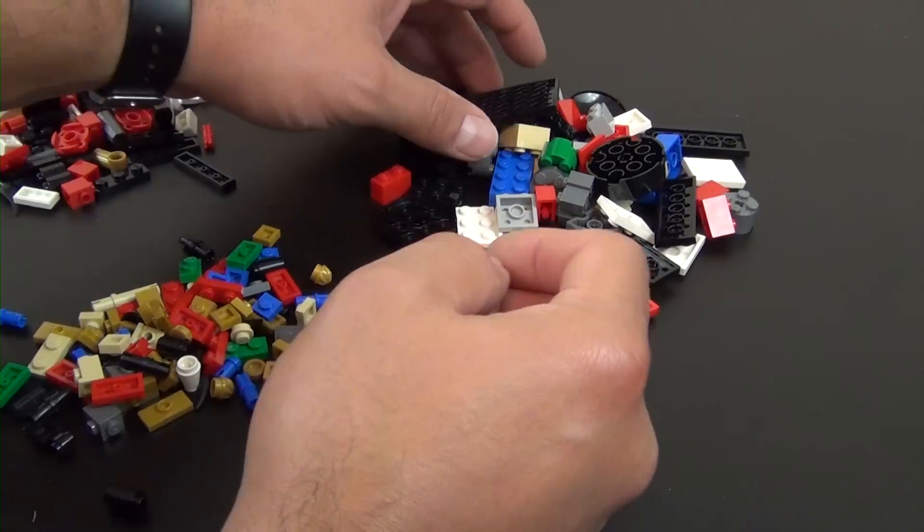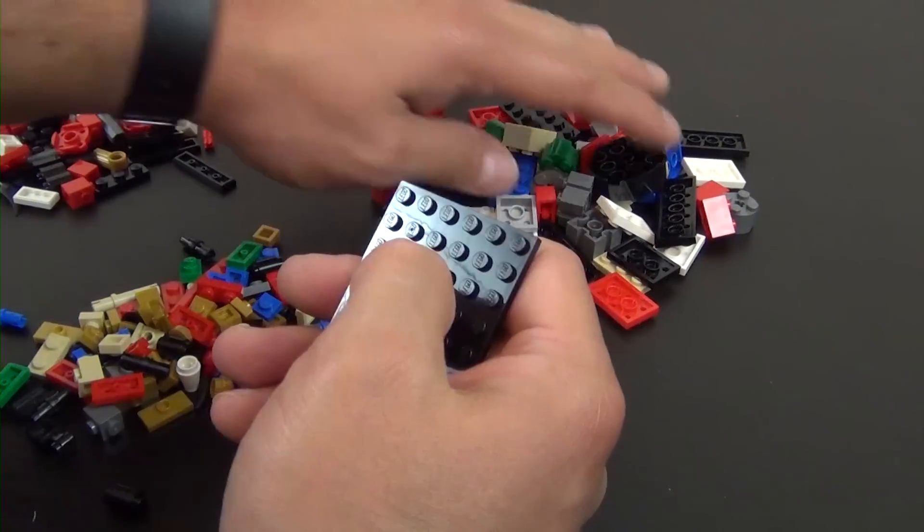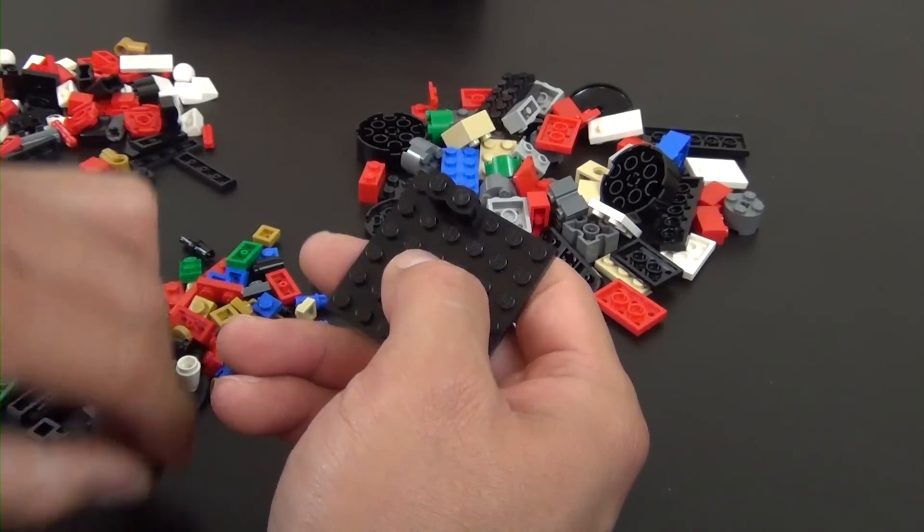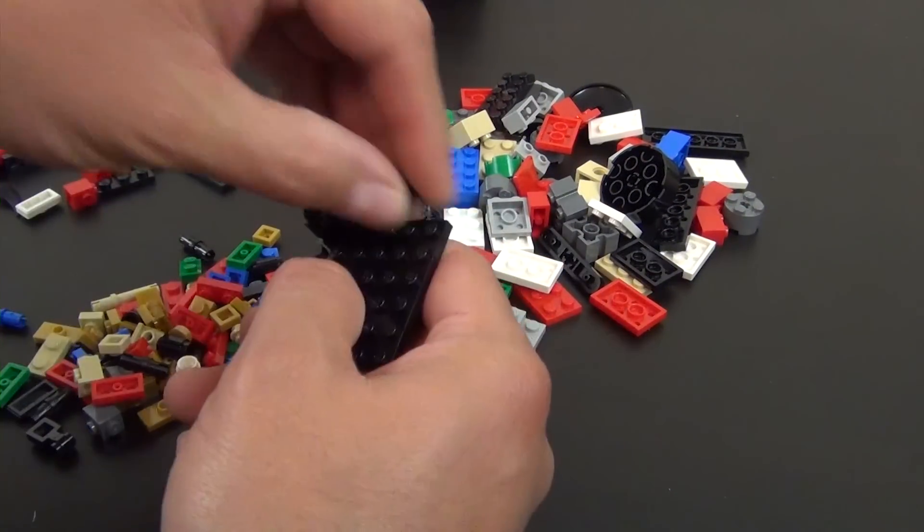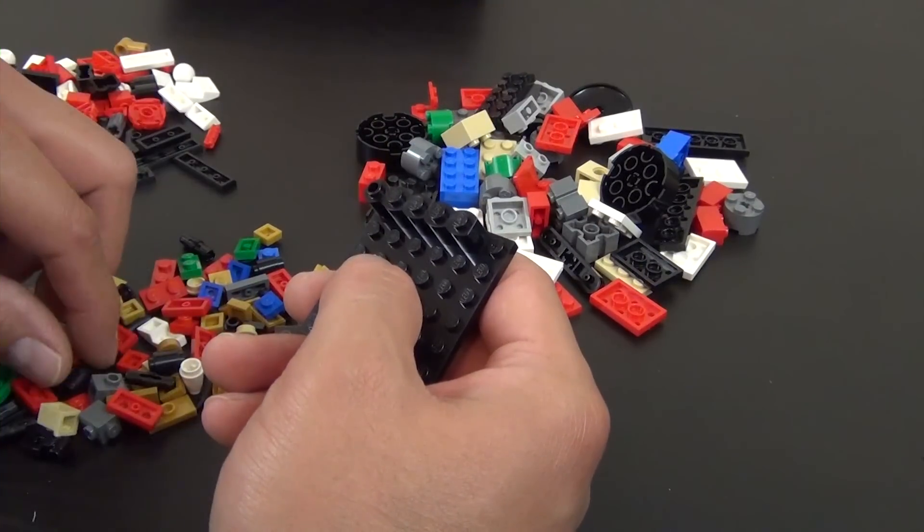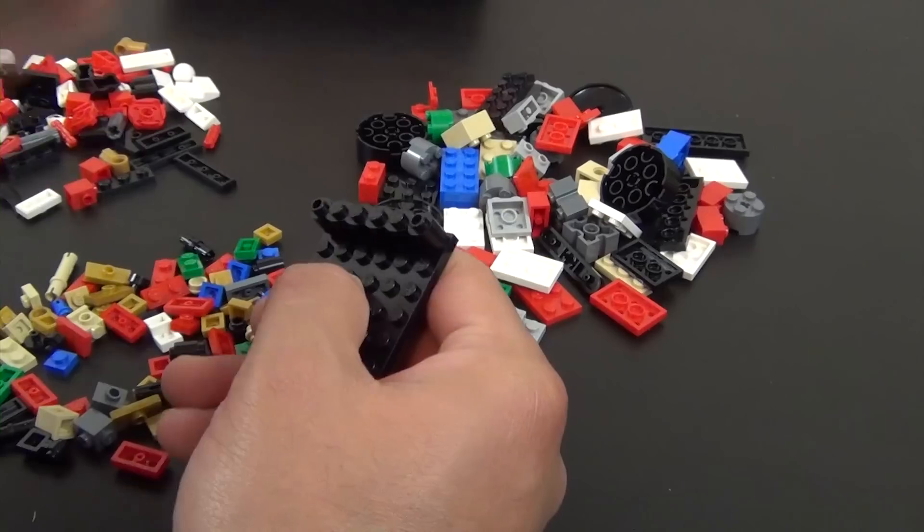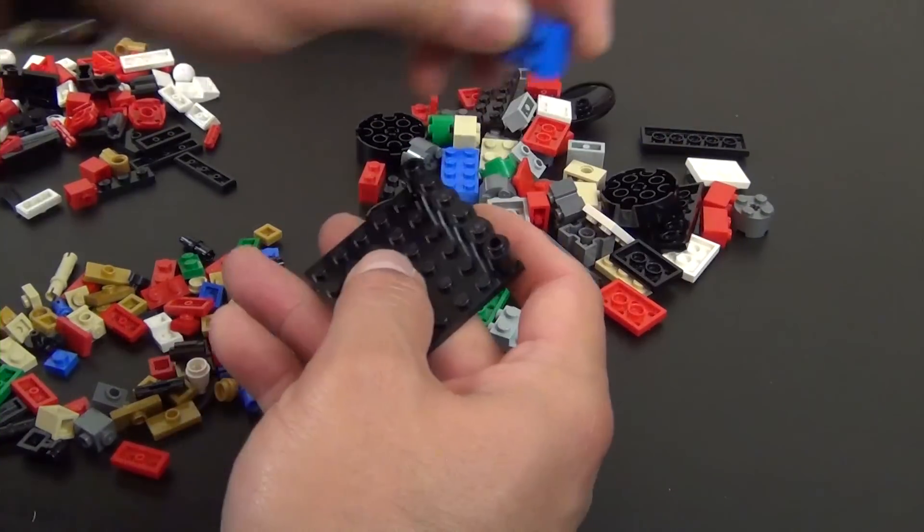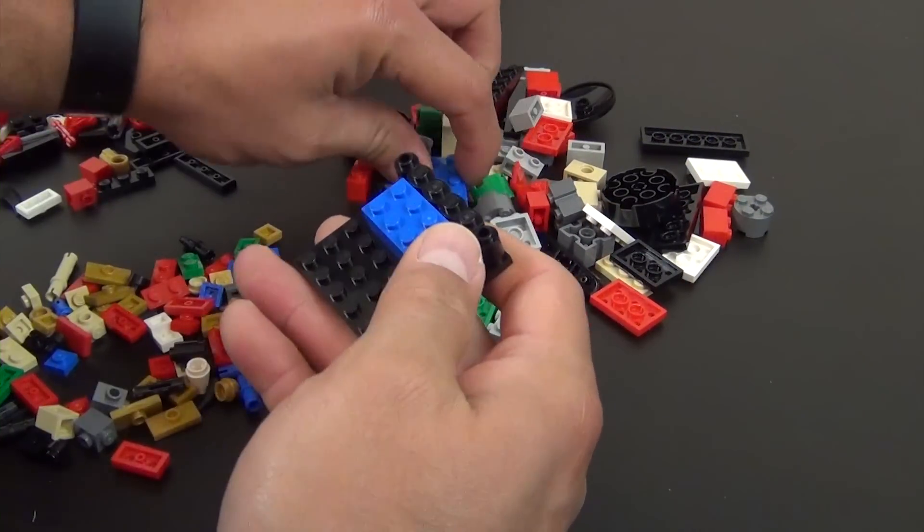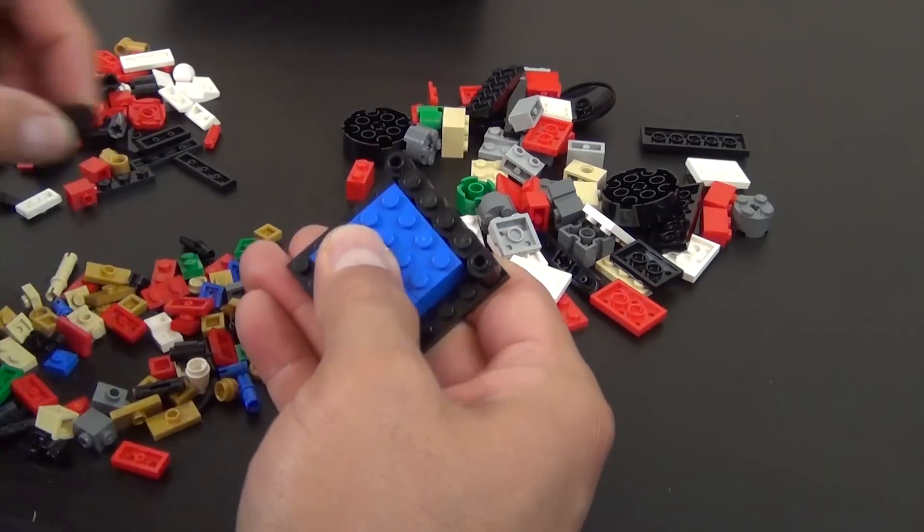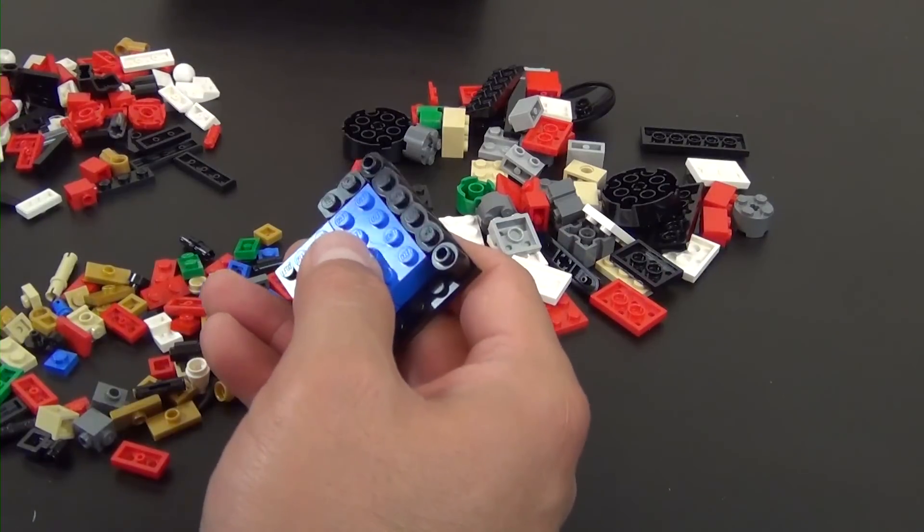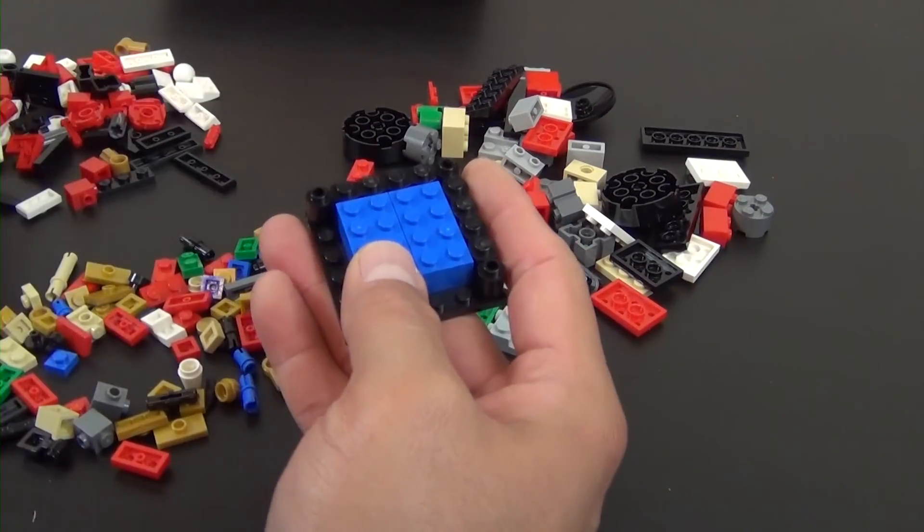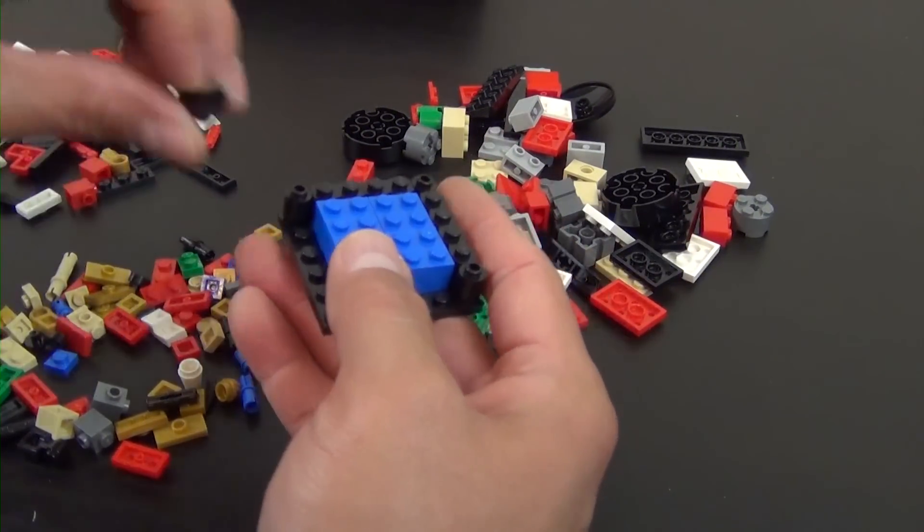Obviously no minifigures. The first thing we're going to do is build the little stand that the nutcracker is going to be on. It starts with these black pieces. We have two 2x4 blue bricks, more or less just infill bricks because it's going to get covered up.